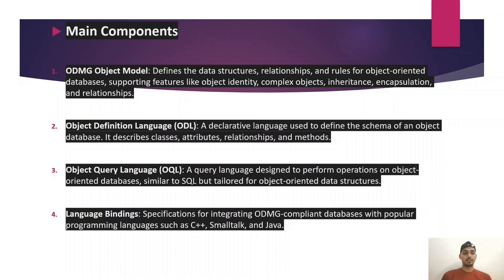Second, Object Definition Language (ODL) — a declarative language used to define the schema of an object database. It describes classes, attributes, relationships, and methods. Third, Object Query Language (OQL) — a query language designed to perform operations on object-oriented databases, similar to SQL, but tailored for object-oriented data structures.